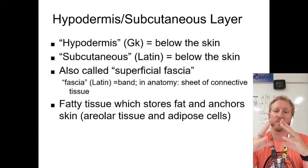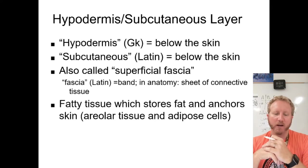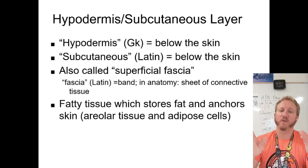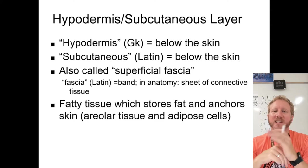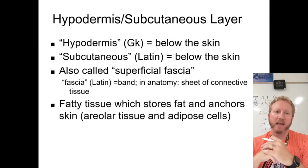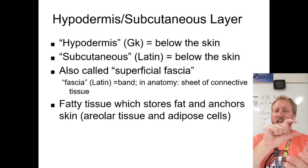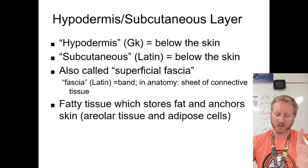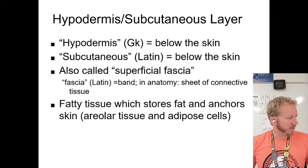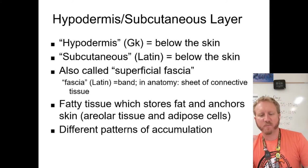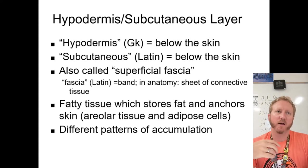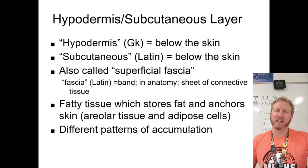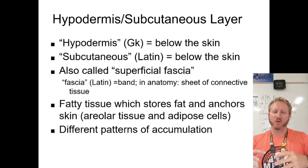The hypodermis layer is fatty tissue that anchors the skin to the rest of the body. It contains areolar tissue and adipose tissue. Necrotizing fasciitis is a disease where this tissue layer dies, causing skin to detach from underlying muscles — it's very serious. There are also different patterns of fat accumulation between males and females, related to evolutionary needs and which muscle groups need energy most.